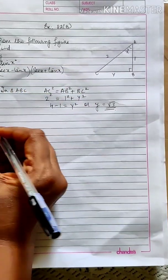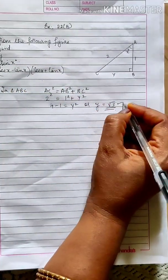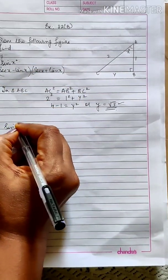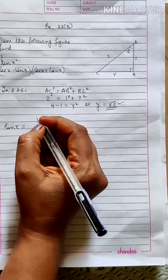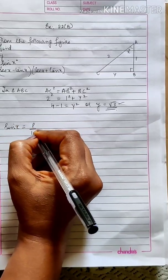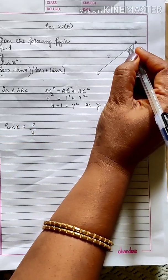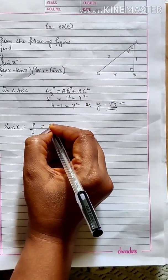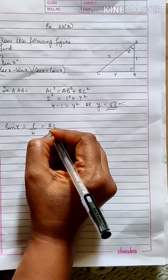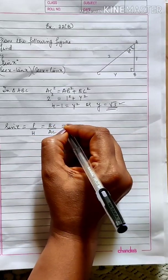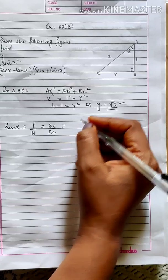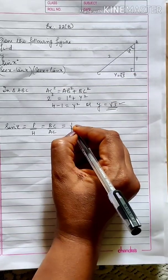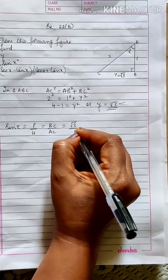Now we will find the first expression — y, we have got. Now the second one, that is sin x. Sin x: you know the ratio which is perpendicular by hypotenuse. With respect to angle x, the perpendicular is BC and the hypotenuse is AC. So BC by AC — BC is y which is equal to root 3 — you get root 3 upon 2.